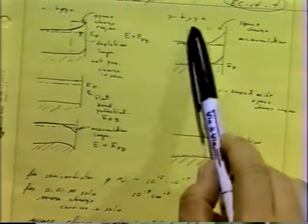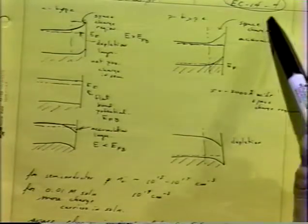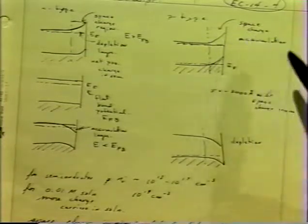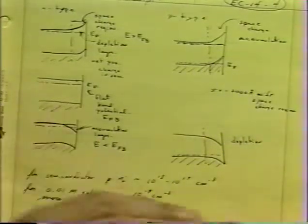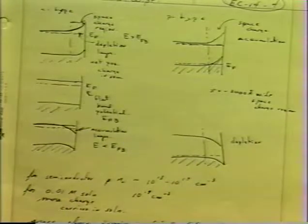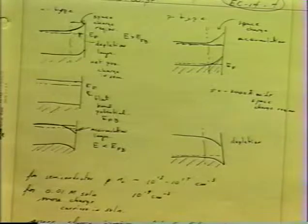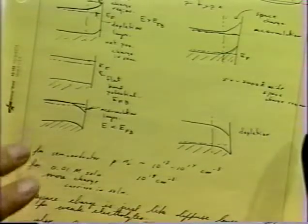A p-type system is analogous. In this case we get accumulation when the bands bend up, because now we have an excess of holes. Electrons have come out of the semiconductor into the solution, leaving a positive charge, and in a p-type that means an excess of majority carriers — holes — fills in the valence band, giving an accumulation layer of holes and metal-type conduction. Conversely, when bands bend down in a p-type, we get a depletion layer and semiconductor-type behavior.